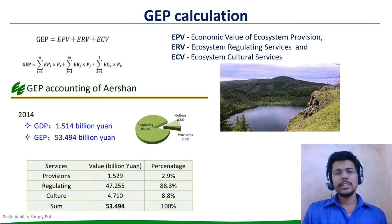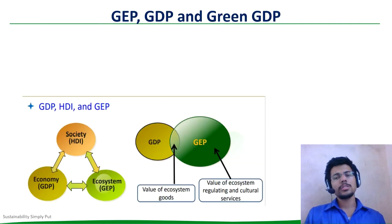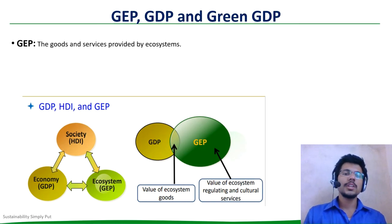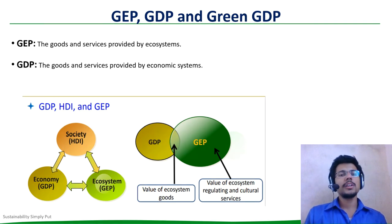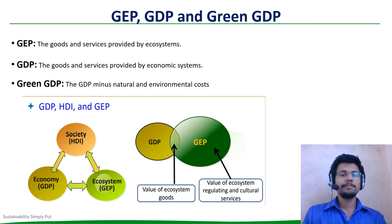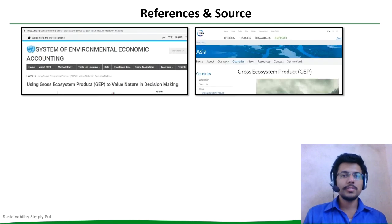The details for the calculation we will see in a separate video. At this point, it is also essential that we familiarize ourselves with three important concepts: GEP, GDP, and Green GDP. GEP is all about goods and services provided by ecosystems. GDP, as we know, are the goods and services provided by economic systems. And Green GDP is the GDP minus natural and environmental costs. I hope now you are in a better position to understand GEP and its importance. Links of the referred websites and papers are given in the description — please do check them.